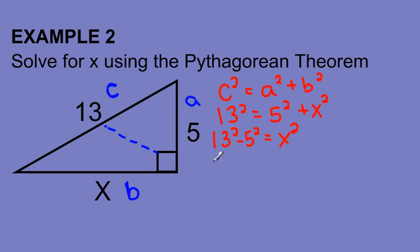Now I have 13 squared, which I know is 169, minus 25 is going to give me x squared. And 169 minus 25 is going to give me 144 equals x squared.